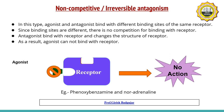Example: phenoxybenzamine and noradrenaline. Phenoxybenzamine is a non-competitive antagonist of noradrenaline.